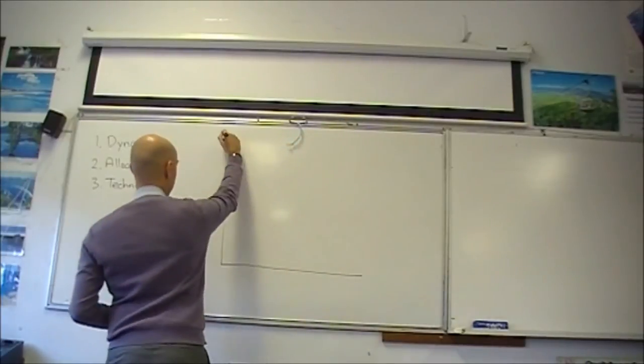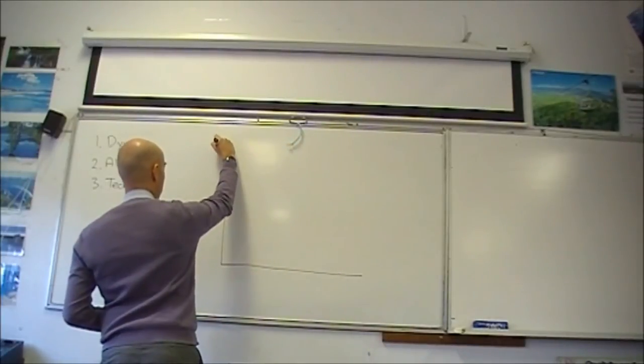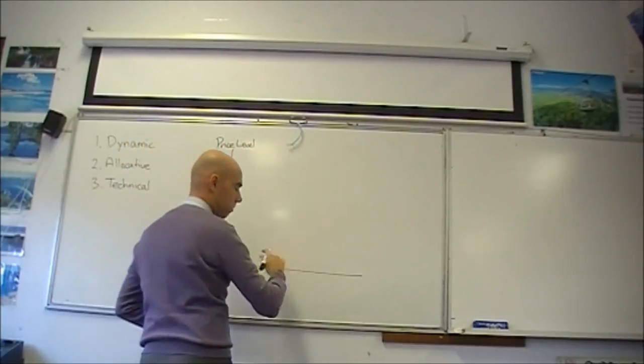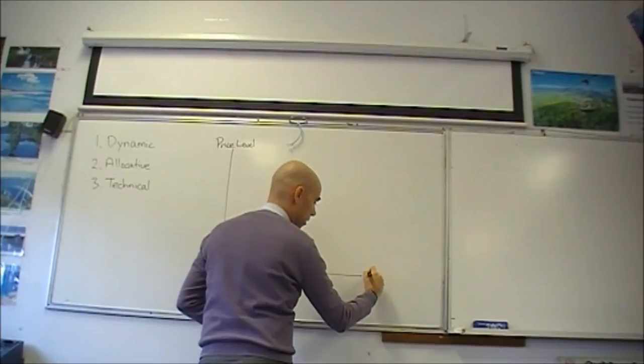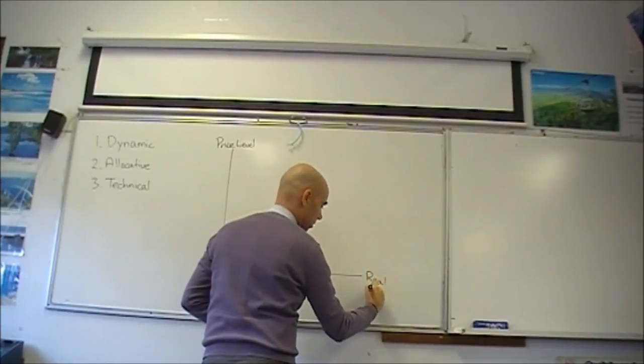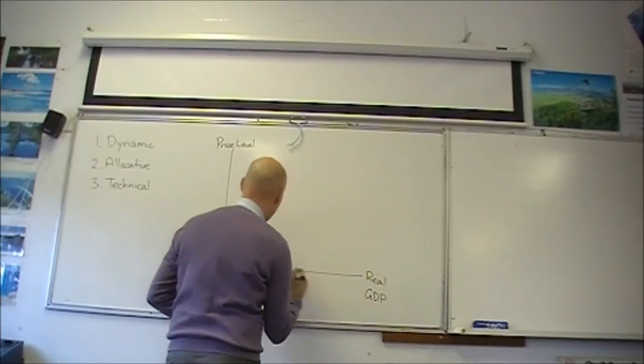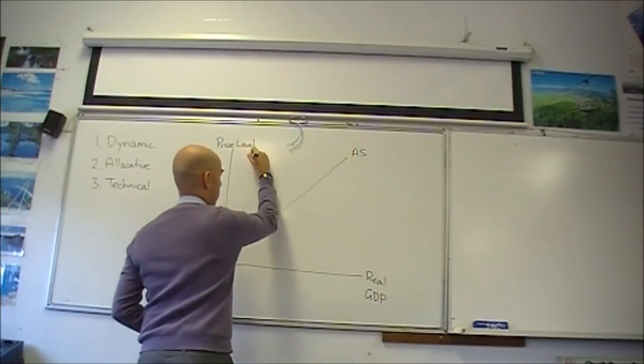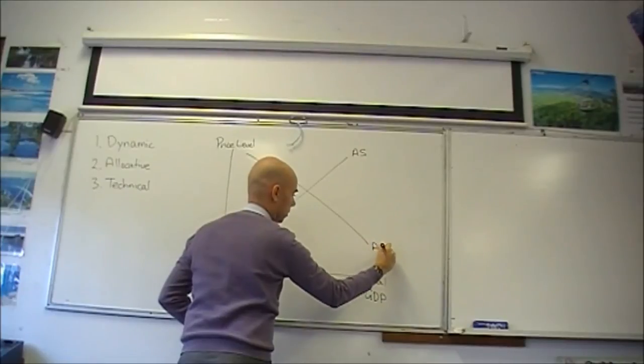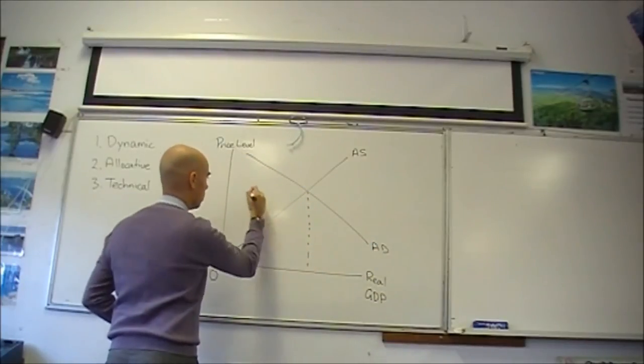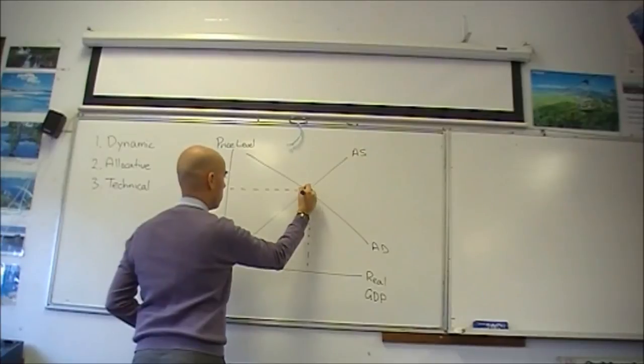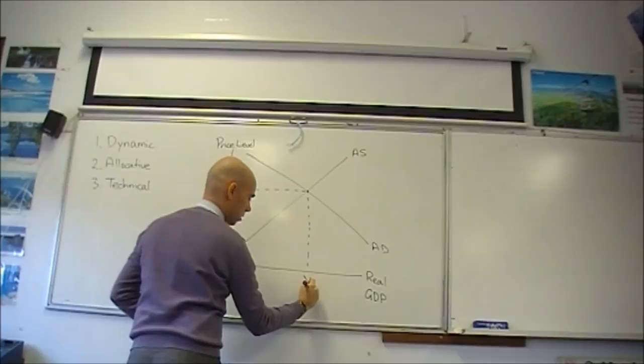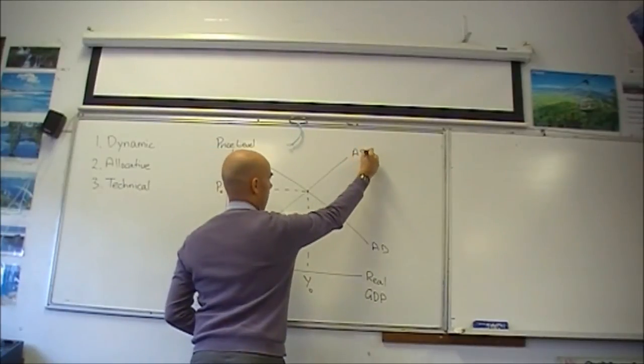So we have the price level, or CPI, as your vertical axis, and then real GDP here on your horizontal axis, zero. You've got your aggregate supply and your aggregate demand over here. And that gives us our initial point of equilibrium, which is P0 and Y0. And it's going to be AS0.